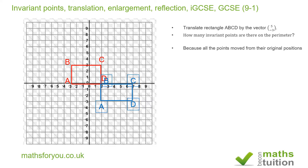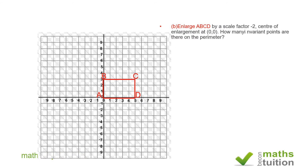Moving on, the next question says: enlarge ABCD by a scale factor of minus 2, center of enlargement at (0, 0). How many invariant points are there on the perimeter? Remember, to be an invariant point, no points on the perimeter will have changed coordinate.